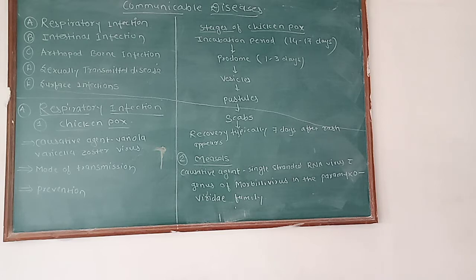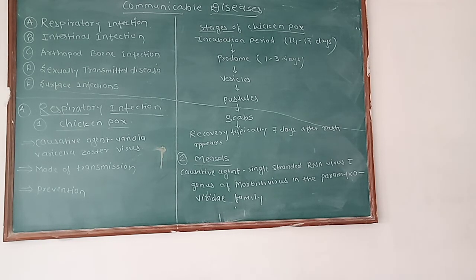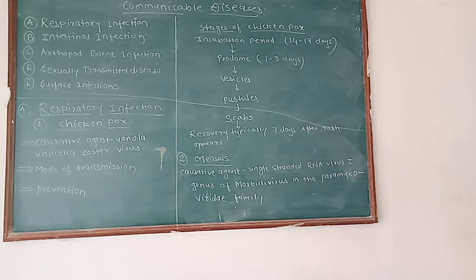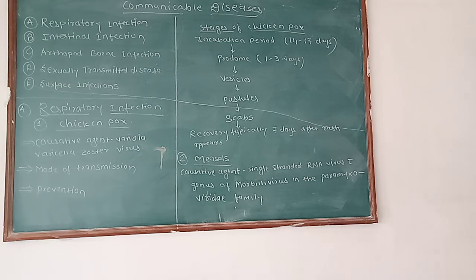A person may develop a communicable disease after becoming infected by a pathogen. Communicable disease spreads when a person is infected by a pathogen such as a virus, bacteria, or fungi. The first mode of transmission is direct contact — if a healthy person comes into direct contact with an infected person, then that healthy person can also get the disease.